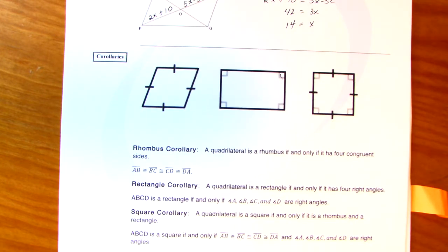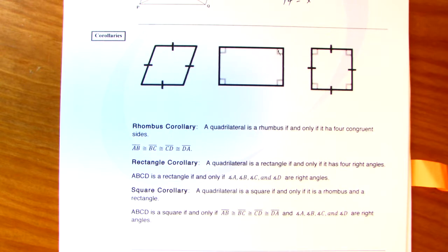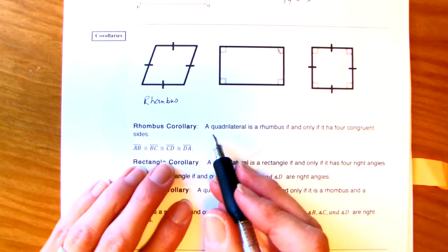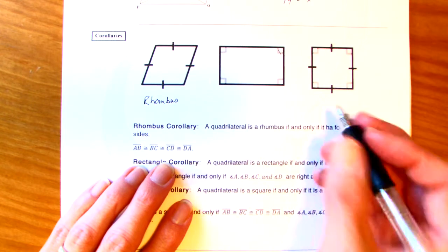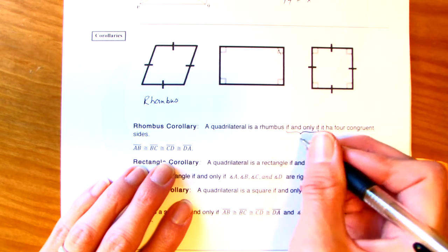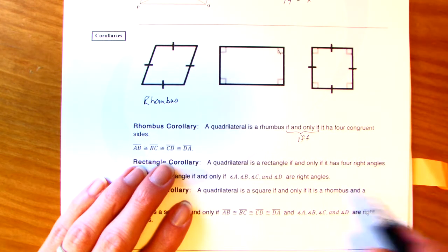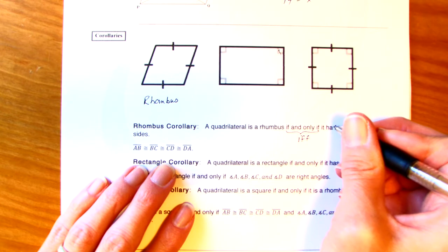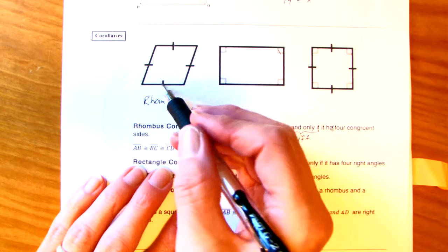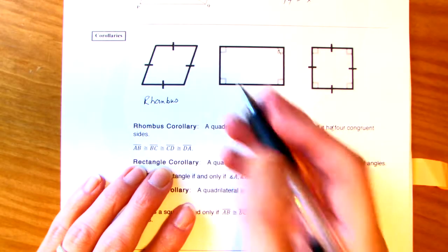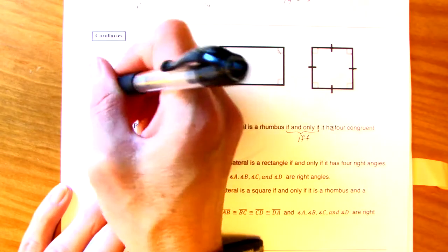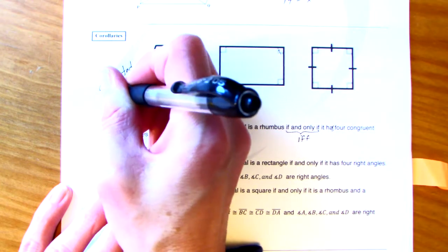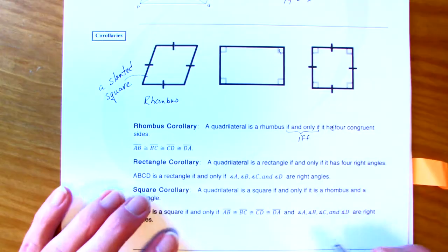Corollaries. I always thought these are silly, but they need to be pointed out. Okay. So here's our rhombus. A quadrilateral is a rhombus. I usually abbreviate if and only if like this. And it also means that the converse is true. If and only if it has four congruent sides. Basically, this is a slanted square.